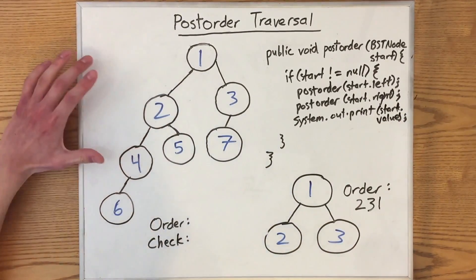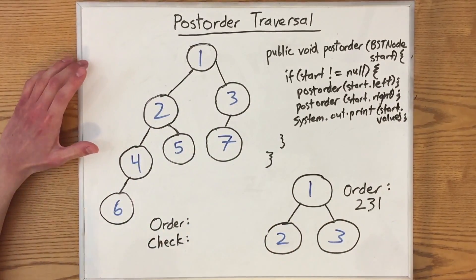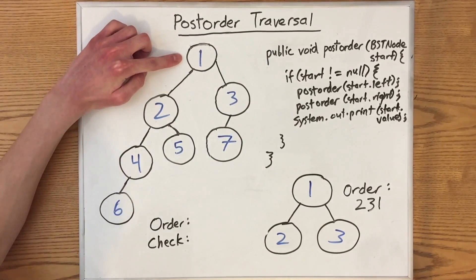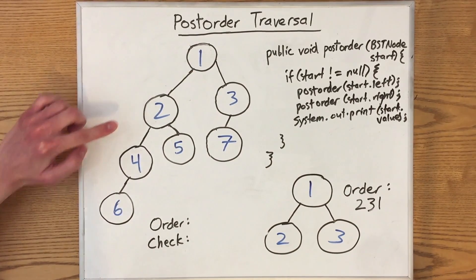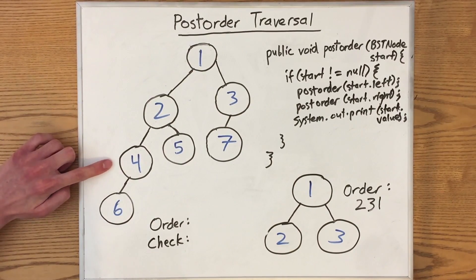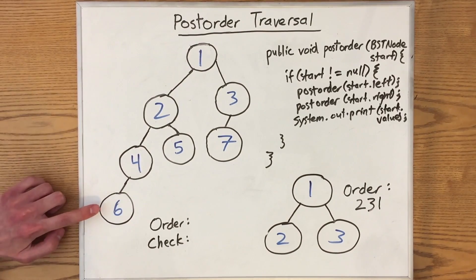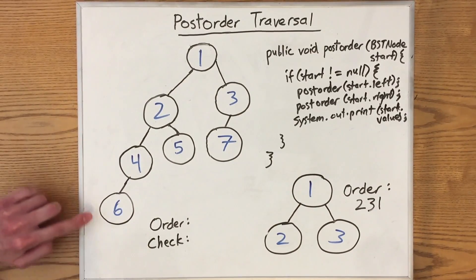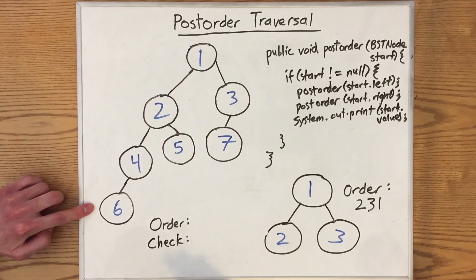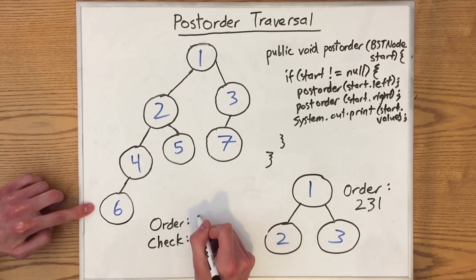Let's see how this works over on this tree. First thing that we do, we start with this root, and we immediately jump into a recursive call. We call post-order on this new subtree. Then it immediately recursively calls post-order on this subtree, and this immediately calls post-order on this subtree. This one calls post-order on its left child — nothing happens. Calls post-order on its right child — nothing happens. So finally we just print out its value, which is 6.